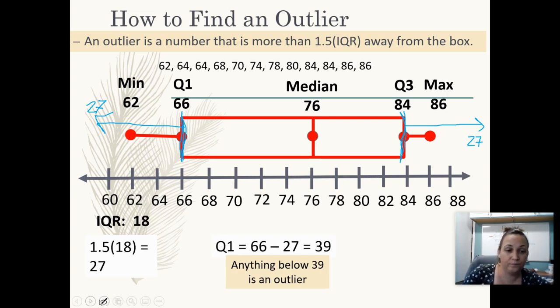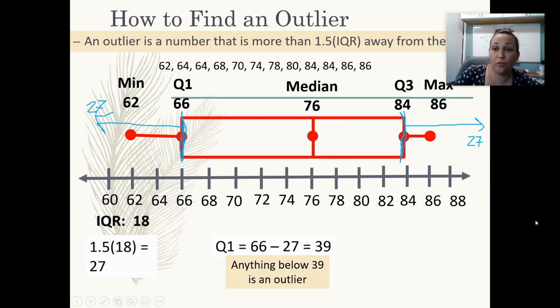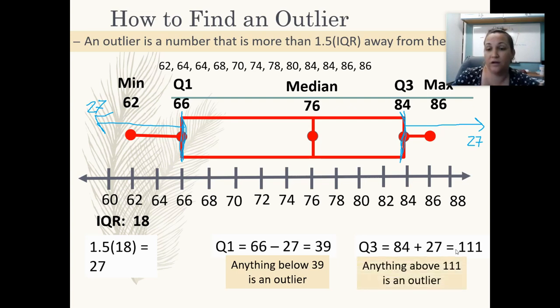As far as calculating, we can do our quartile three, which is 84, and we would add 27 since we're going to the right—we want to look for bigger numbers. So 84 plus 27 is 111. So that would mean if any of my data was bigger than 111, that would be an outlier.